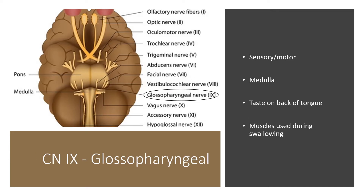Cranial nerve 9 is the glossopharyngeal nerve. It has both sensory and motor function and is located at your medulla. Its sensory function involves the muscles used during swallowing.